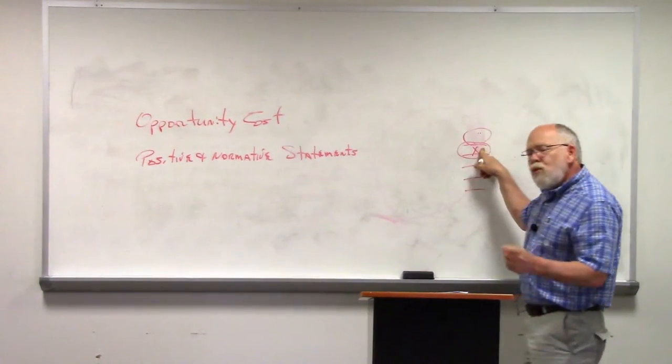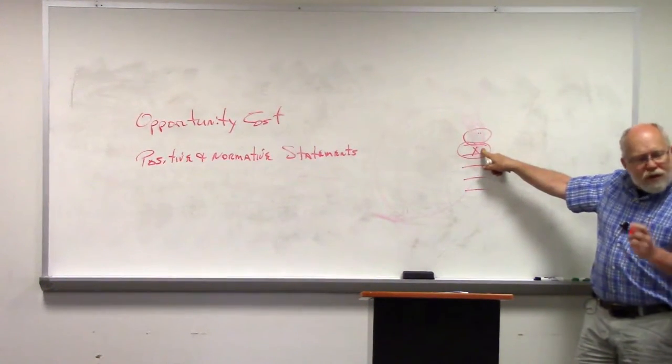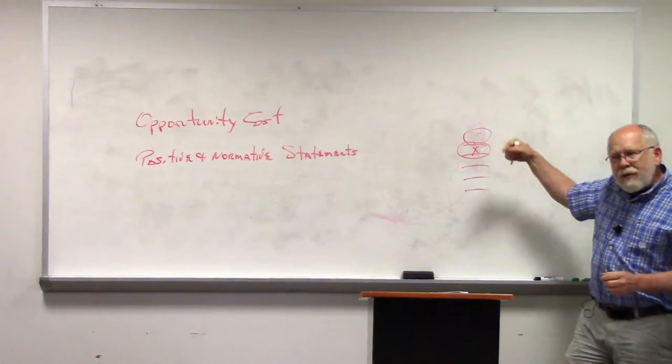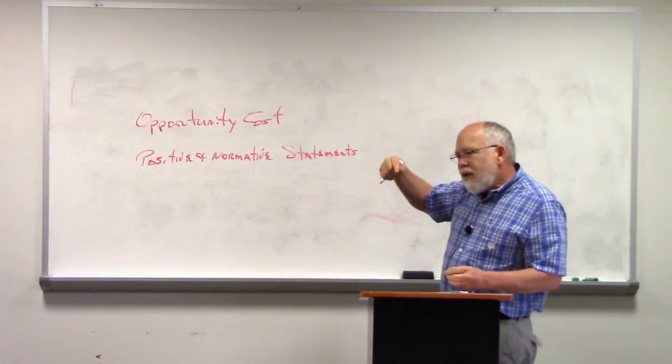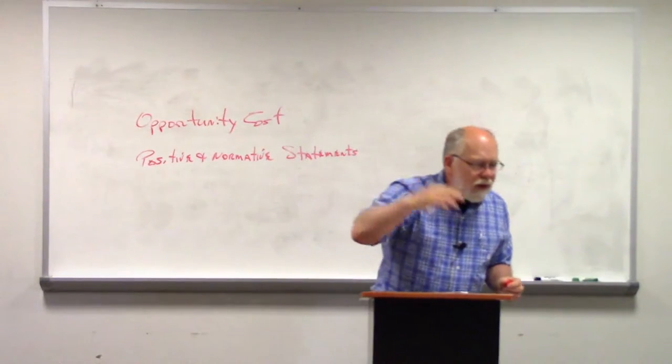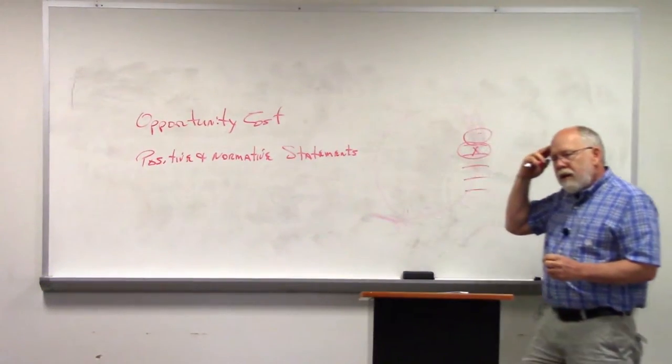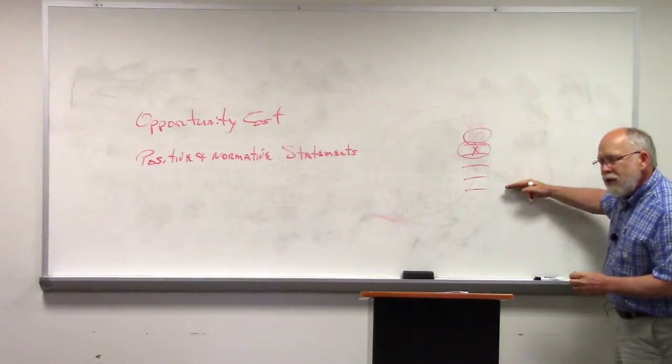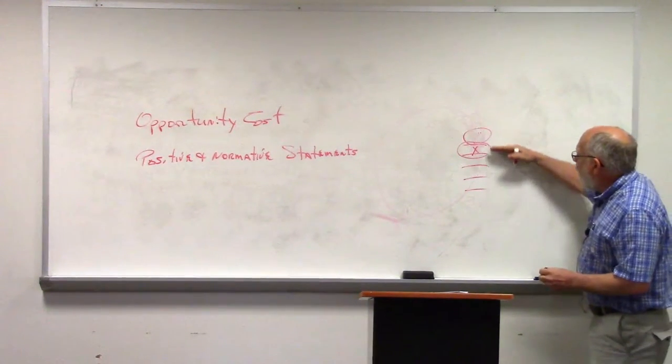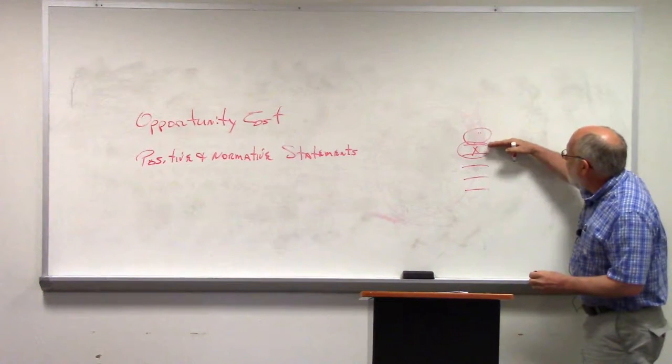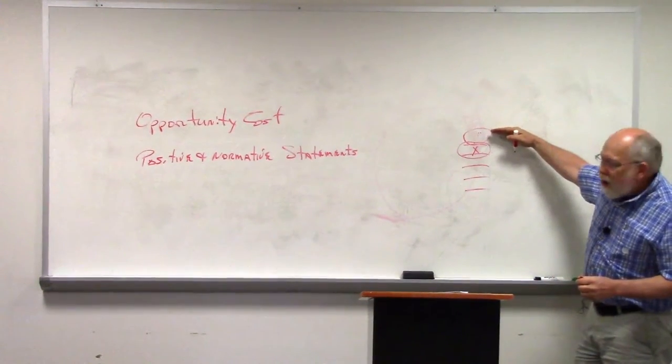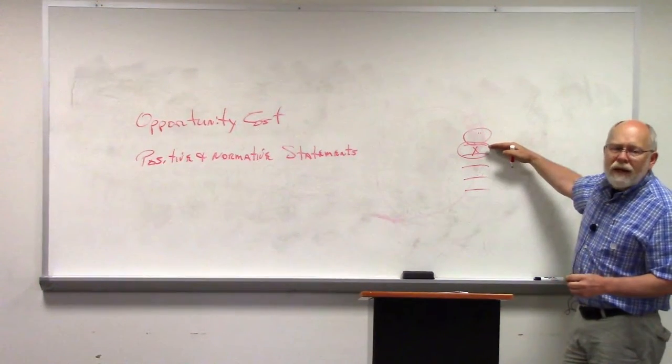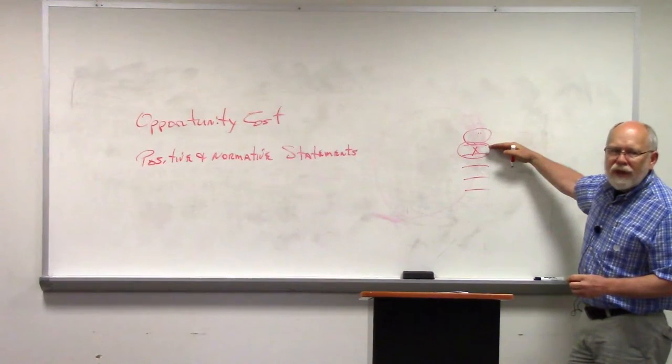Because that's what you would have done if you didn't come to class. And I would submit to you that whenever you're thinking about going to class or doing whatever else, in your mind, you are ranking all the different options that you have. And in your mind, this ranking is whatever comes at the very top, you do it. Whatever comes in second place is called your opportunity cost.